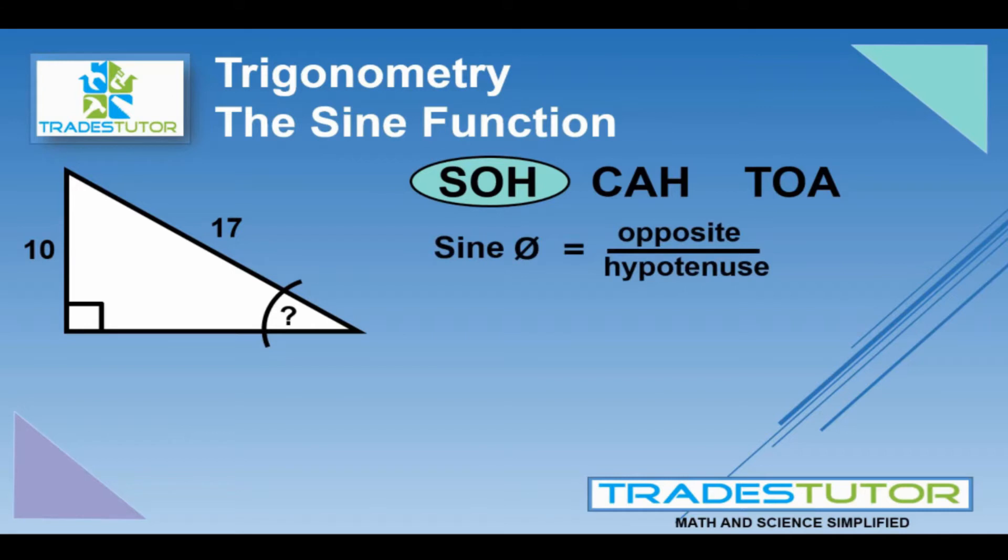The sine function, or the angle, is equal to the opposite over the hypotenuse. Now let's identify. There's your opposite, and there's your hypotenuse. It's as simple as that. You just plug those numbers in, and 10 divided by 17 gives you 0.588.